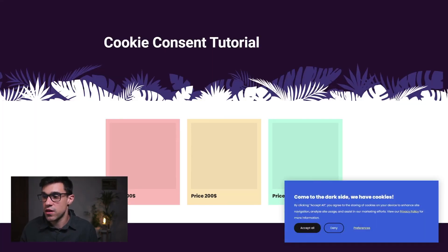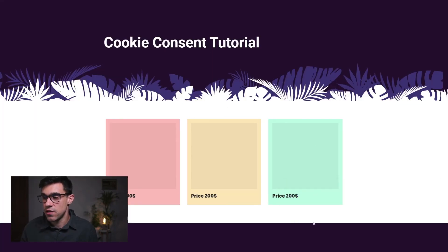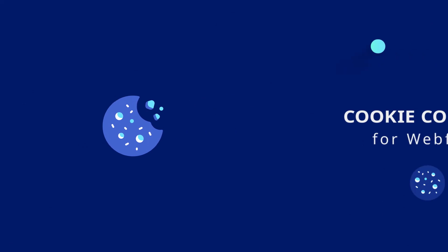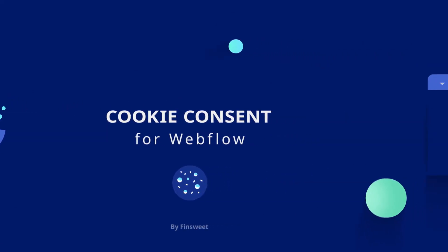Once the site is published, the cookie consent works as expected — closing it and refreshing the page confirms it doesn't reappear. To recap: in Step 1 we created the cookie consent UI in Webflow; in Step 2 we added attributes to our elements; in Step 3 we added attributes to the scripts we want to turn on and off; and in Step 4 we added the FinSuite cookie consent script to the custom code section. That's how you build a FinSuite cookie consent — thanks for watching, check out more FinSuite videos to keep learning Webflow.